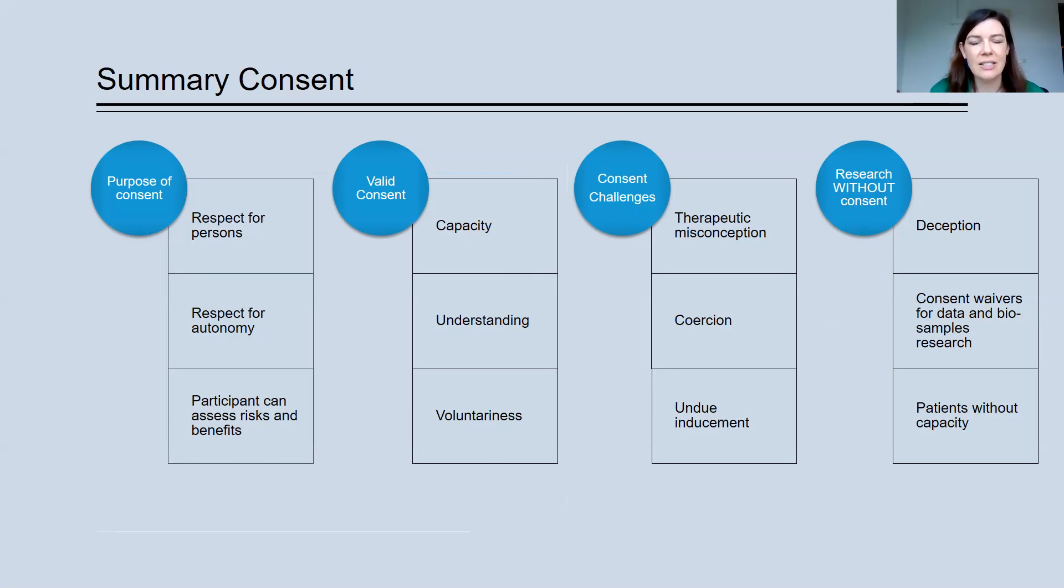We've talked about some challenges to consent, including the therapeutic misconception, perceptions of coercion and undue inducement. And we've talked about a few examples of where you might get ethical approval to do research without consent, including deception, consent waivers, and research with patients without capacity. Thanks so much. I hope you found this useful.